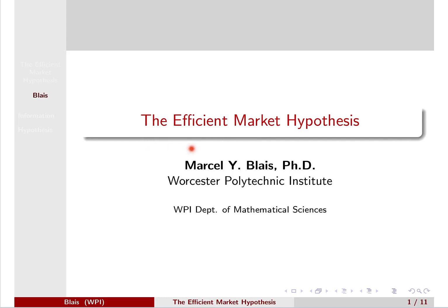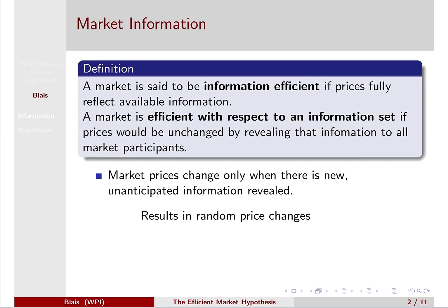In this lecture we will be studying the efficient market hypothesis. First we have to talk about market information. We say a market is information efficient if prices fully reflect available information. More specifically, we say a market is efficient with respect to an information set if prices would be unchanged by revealing that information set to all market participants.